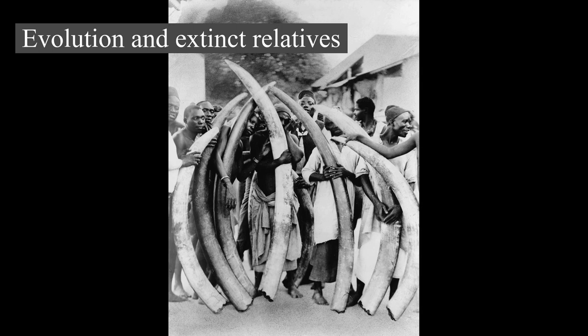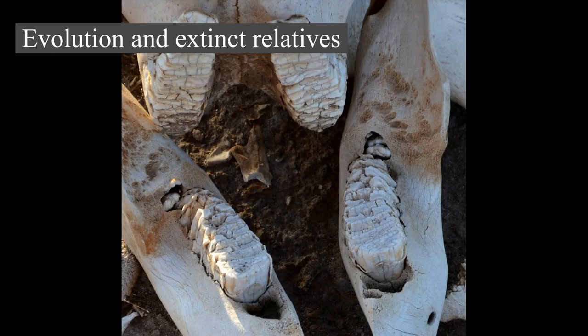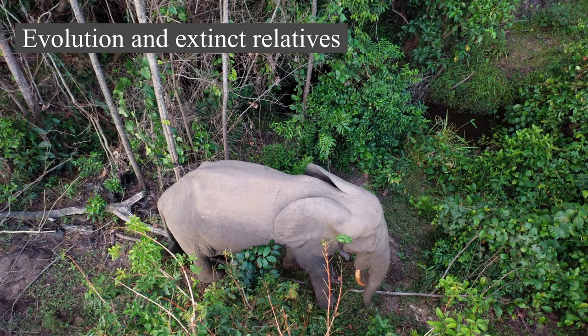The second radiation was represented by the emergence of the Gomphotheres in the Miocene, which likely evolved from Eritreum and originated in Africa, spreading to every continent except Australia and Antarctica. The third radiation started in the late Miocene and led to the arrival of the Elephantids, which descended from and slowly replaced the Gomphotheres. The African proboscidean Gomphotherioids gave rise to Loxodonta, Mammuthus, and Elephas. Loxodonta branched off earliest around the Miocene-Pliocene boundary.